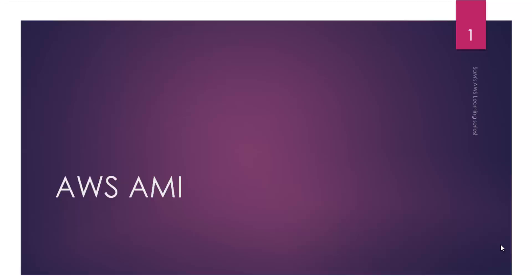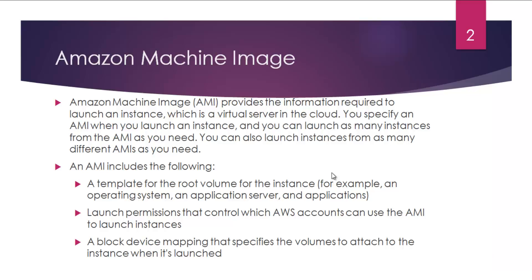Hey guys, Sam here. Welcome to another video on the AWS Learning Series. We are going to talk about AMI, which stands for Amazon Machine Image. AMI provides the information required to launch an EC2 instance, which is a virtual server in the cloud. You specify an AMI when you launch an instance, and you can launch as many instances from an AMI as you need. Think of it as a blueprint from which you launch different numbers of EC2 instances.